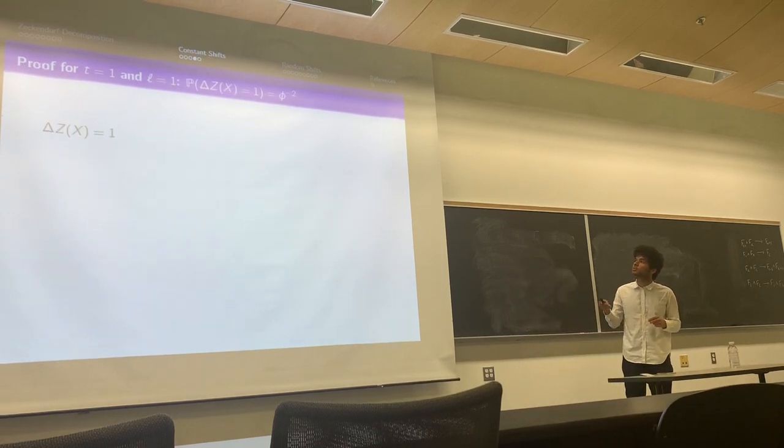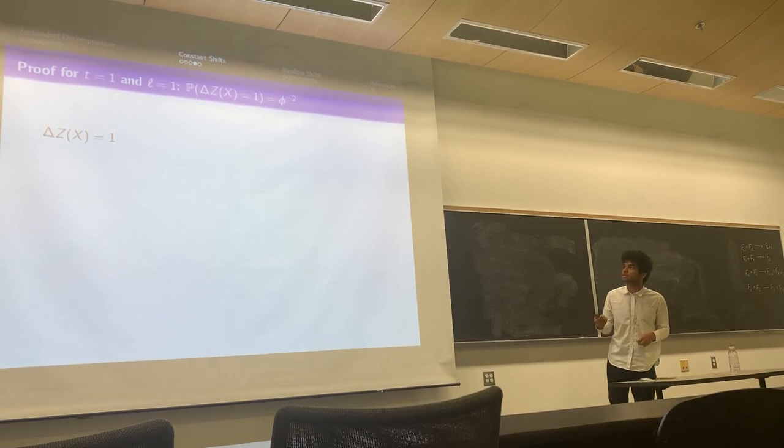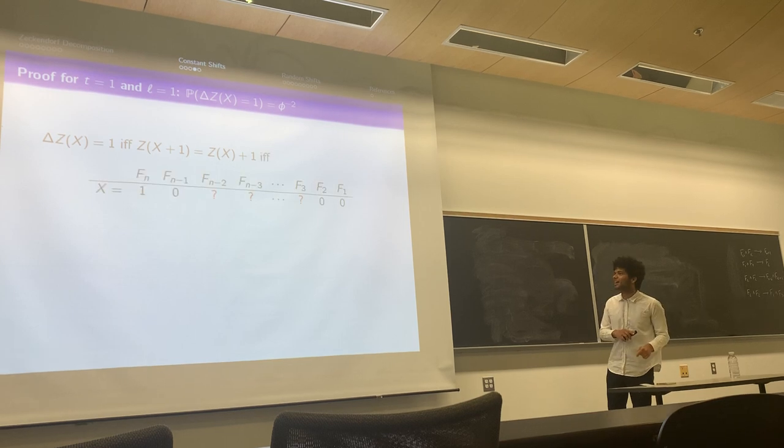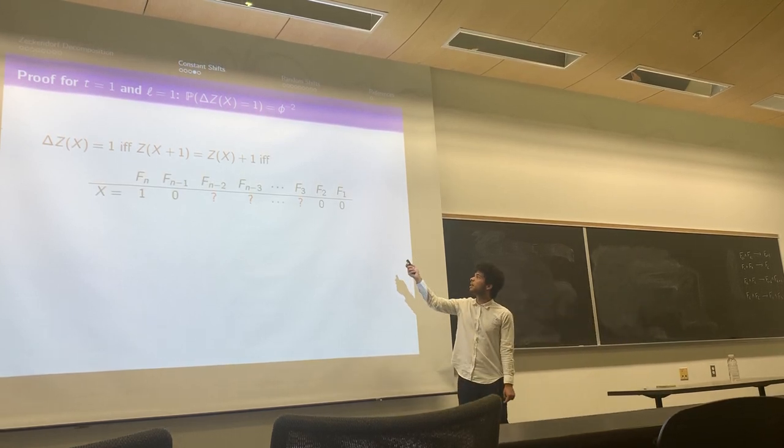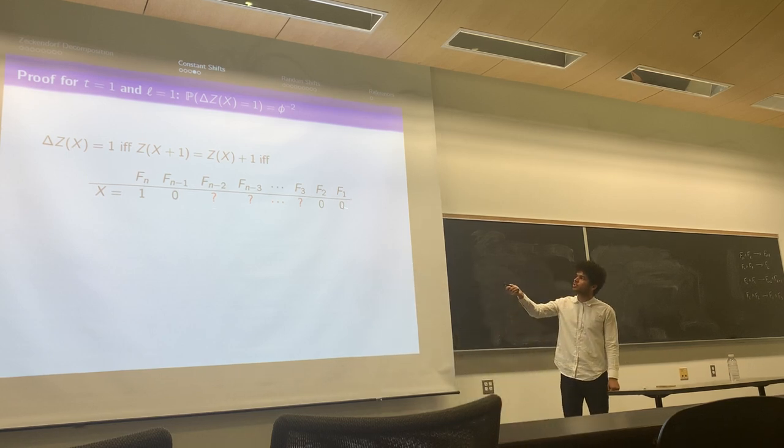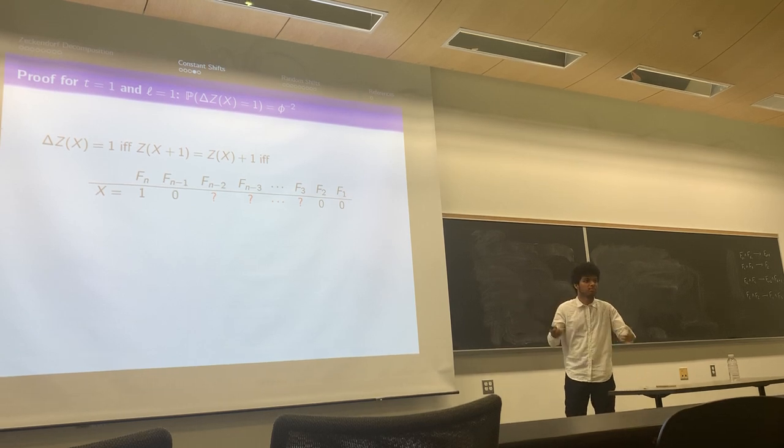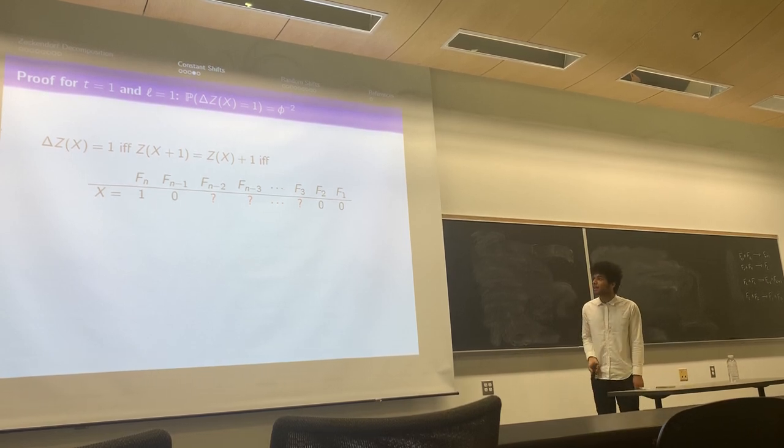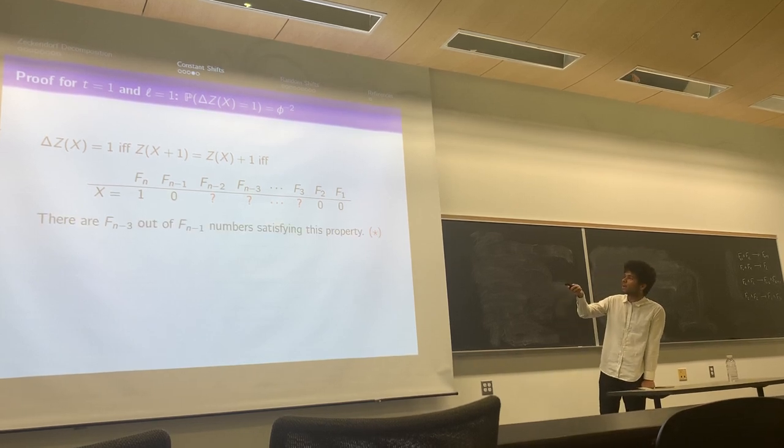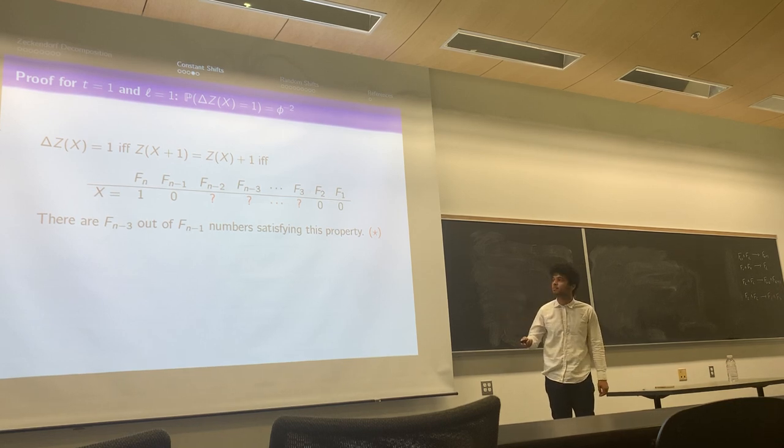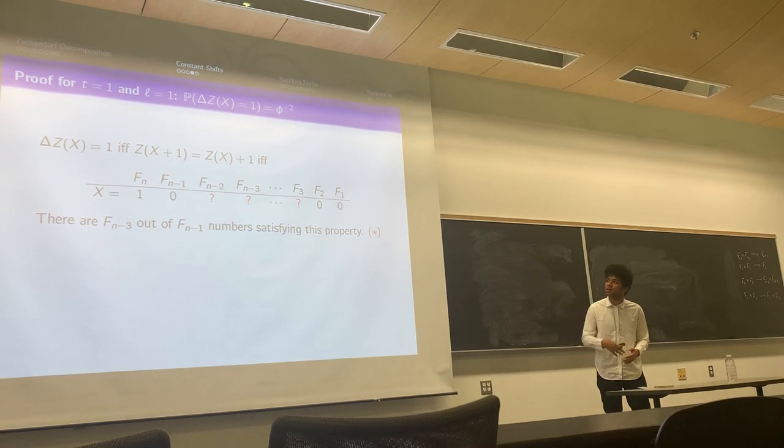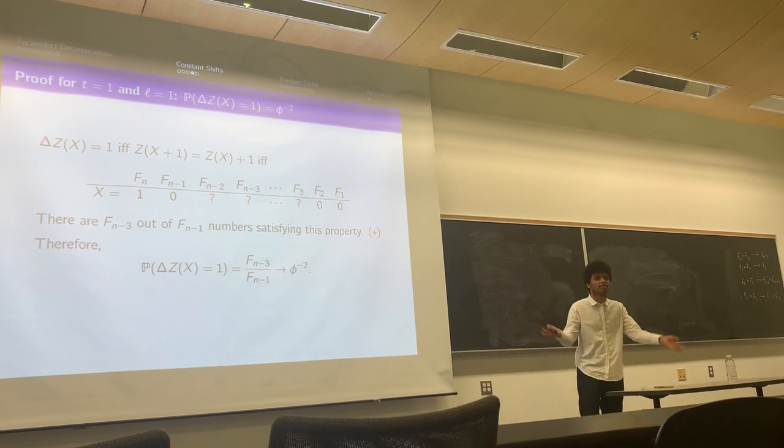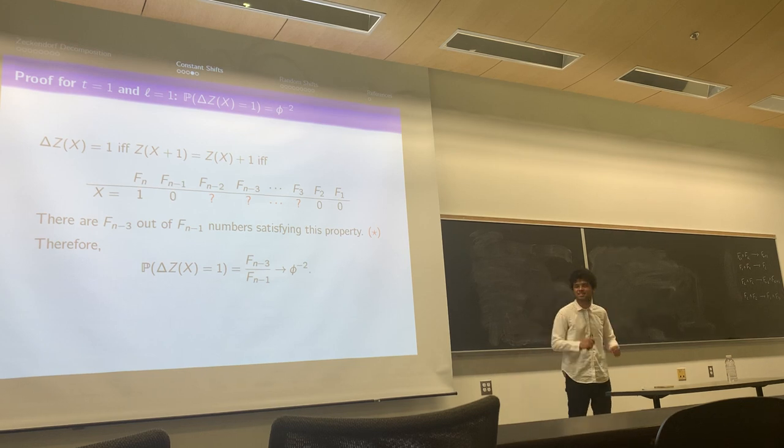I'm going to go through the proof for T equals one and L equals one. We wanted to know when does ΔZ equal one. That's going to be if and only if Z(x+1) = Z(x) + 1. That's going to happen if and only if the first two digits here is zero. That's because when you add the one you're going to change the zero to one and there's not going to be more simplification made because no two things are adjacent. Here we have n minus four question marks to choose from, and so the answer to how many ways we can choose that is Fₙ₋₃ out of the Fₙ₋₁ numbers had in the beginning. So the probability is Fₙ₋₃ over Fₙ₋₁.